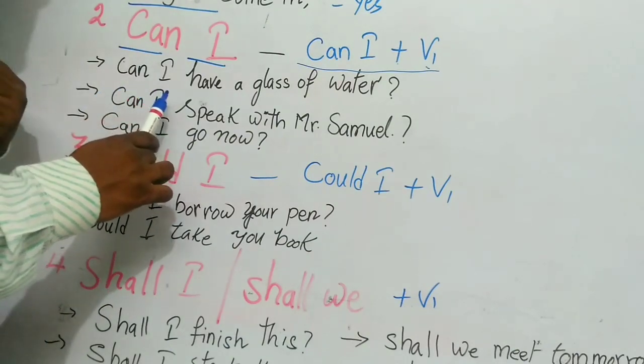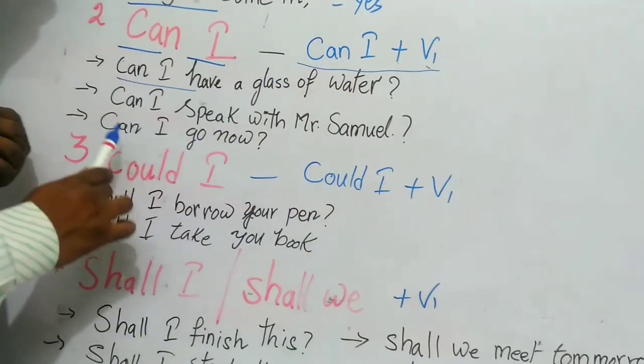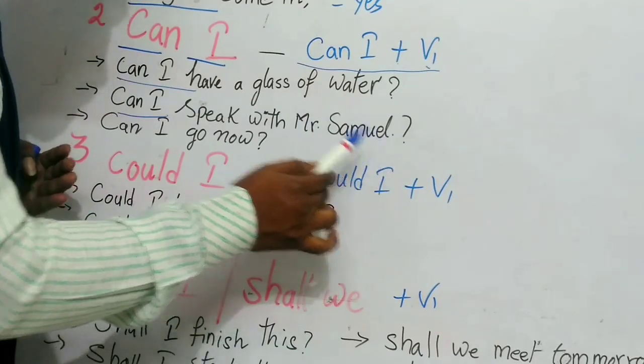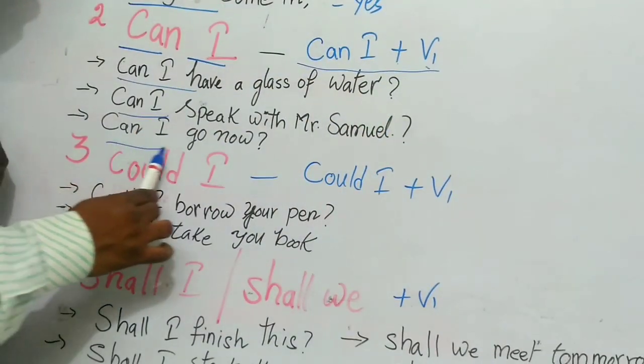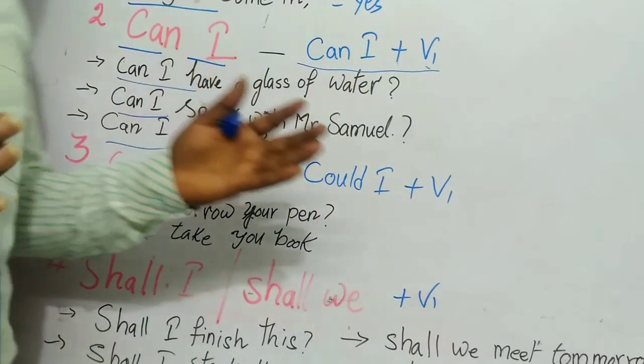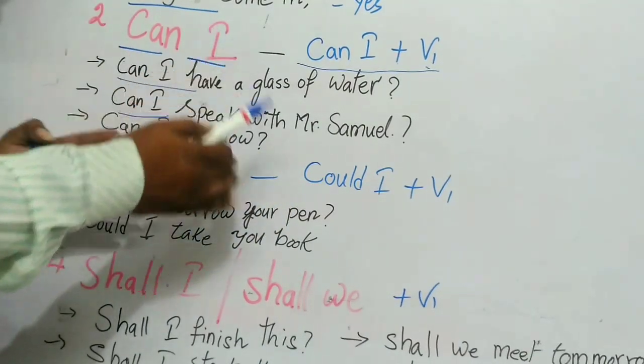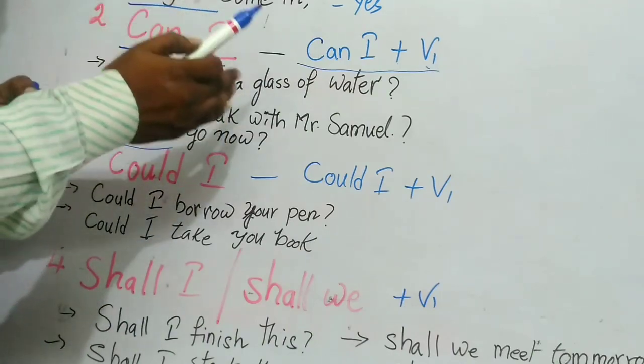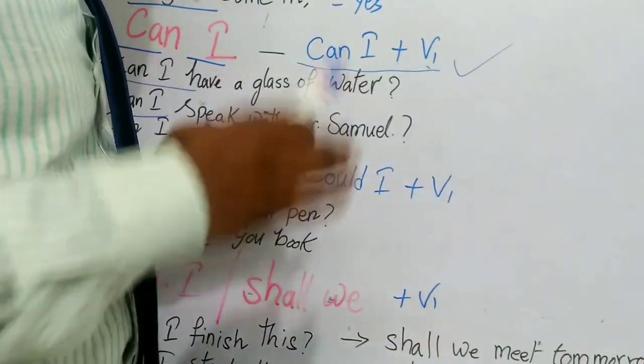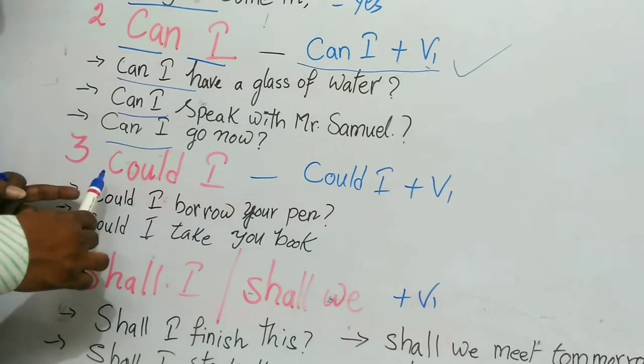Can I speak with Mr. Samuel? Can I go now? Can I have some money? We can use it in many ways. Actually it's not the traditional method, but in modern English people use Can I to ask for permissions.